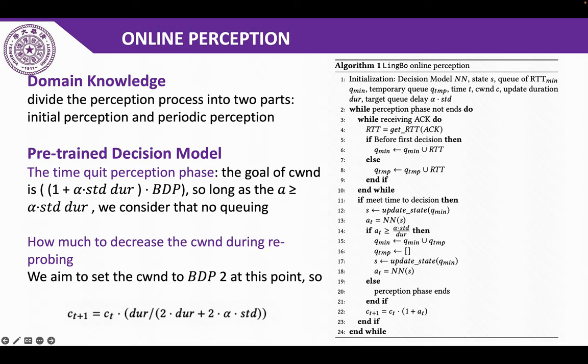We aim to leverage domain knowledge and the pre-trained decision model to estimate the minimum RTT distribution as accurately as possible without impairing bandwidth utilization.